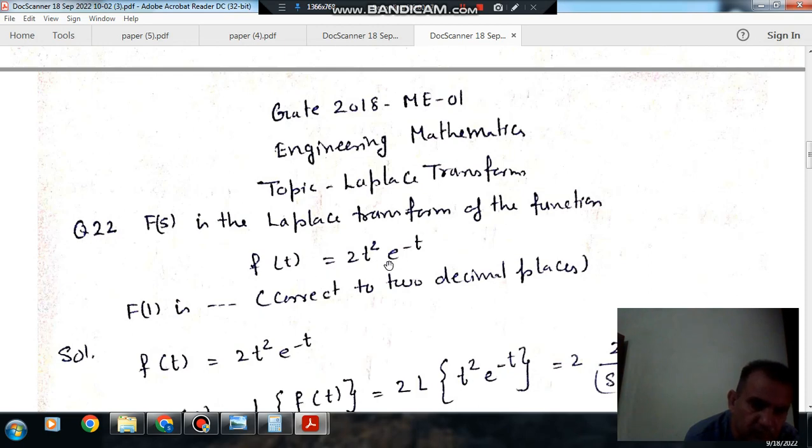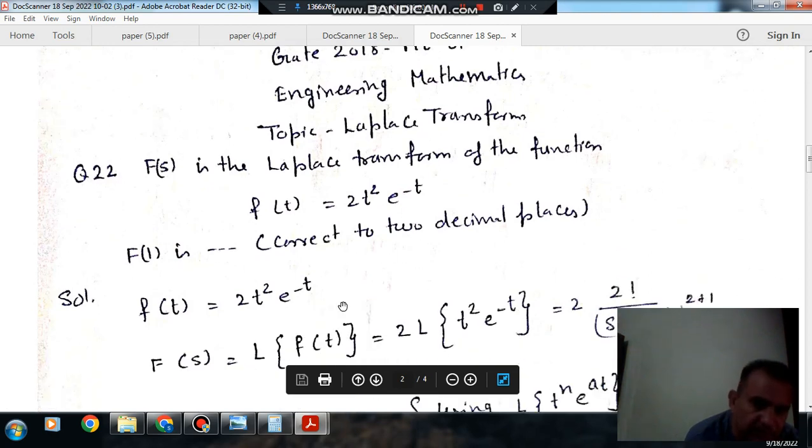The function is f(t) = 2t²e^(-t). F(t) is equal to 2t² times e to the power minus t is given.